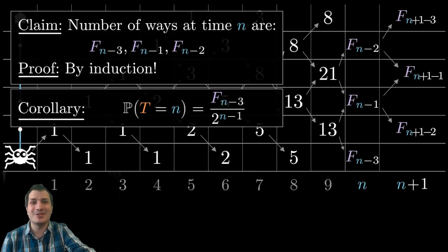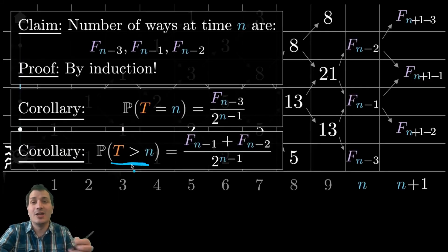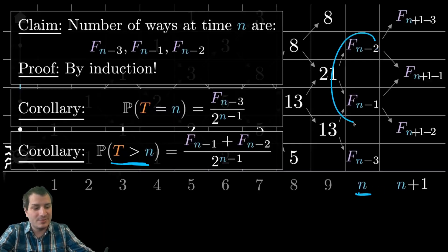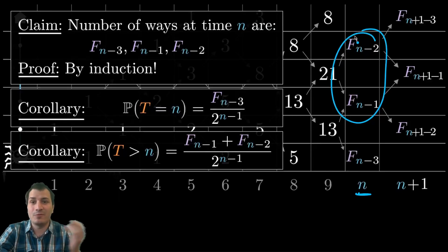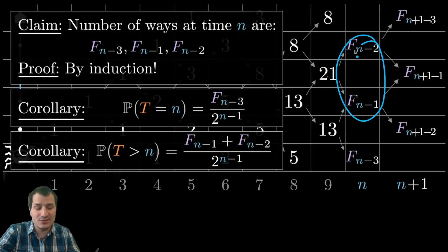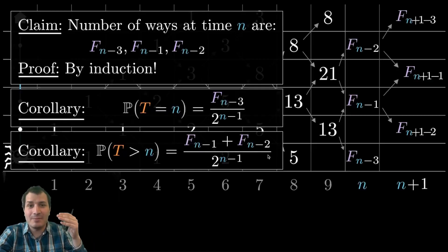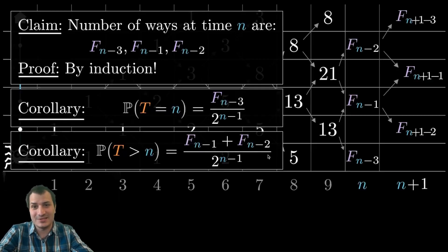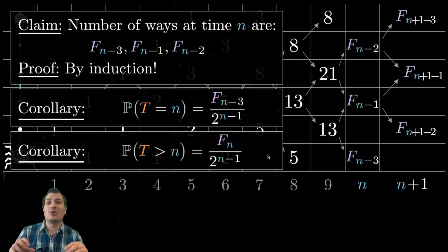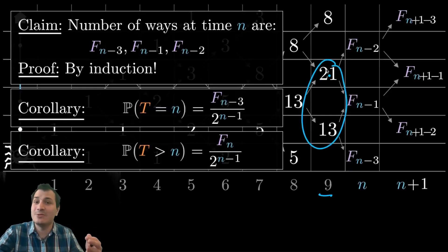The other fun corollary: the cumulative distribution will also be a Fibonacci number. What is the chance he's still walking at time T greater than n? At time n, if he hasn't finished his walk, he must be somewhere in the middle — in one of the two interior positions of the pentagon. There are F(n-1) and F(n-2) ways he can be in those two positions, so the answer is F(n-1) plus F(n-2), which equals F(n). So the chance he is still walking at time n is also a Fibonacci number. For example, at t equals nine, there are 21 plus 13 equals 34 ways he could still be out for his walk.